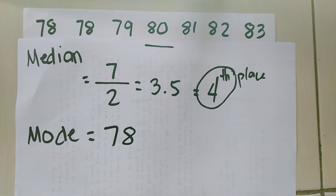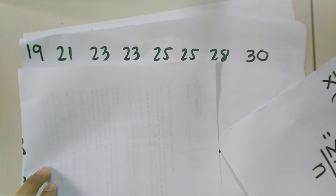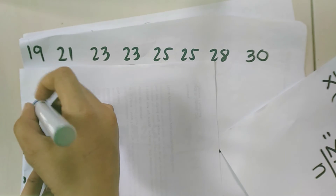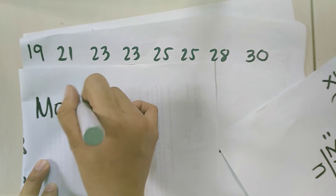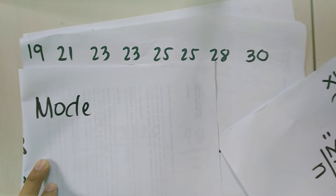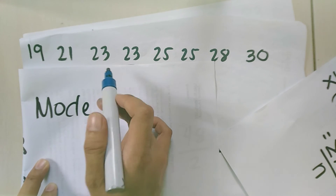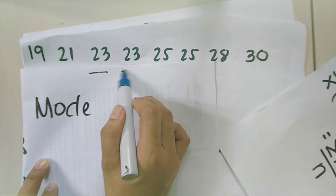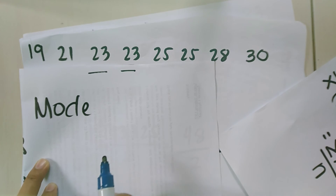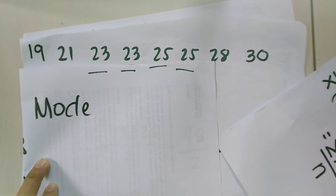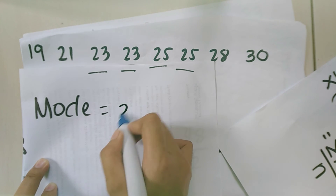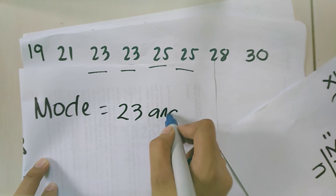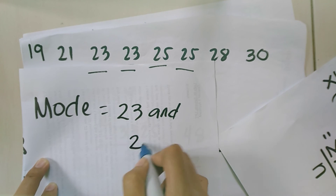How about the mode for the other dataset? We have 23 and 23, and we also have 25 and 25. We have 2 modes: 23 and 25.